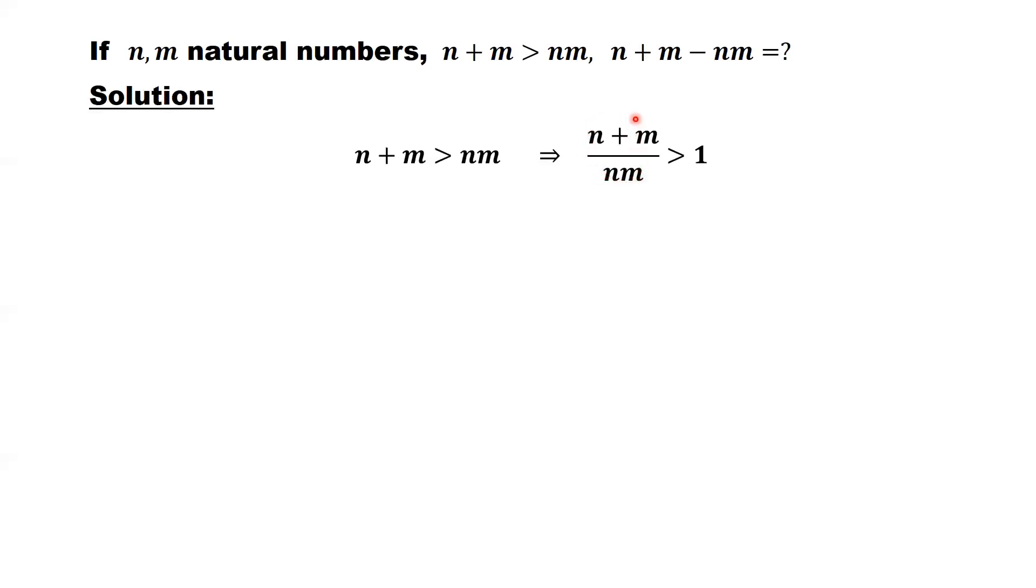We separate the left-hand side into two parts: n divided by nm. n can be cancelled, equals 1 over m. The second term, m can be cancelled, equals 1 over n. This implies 1 over n plus 1 over m is bigger than 1.